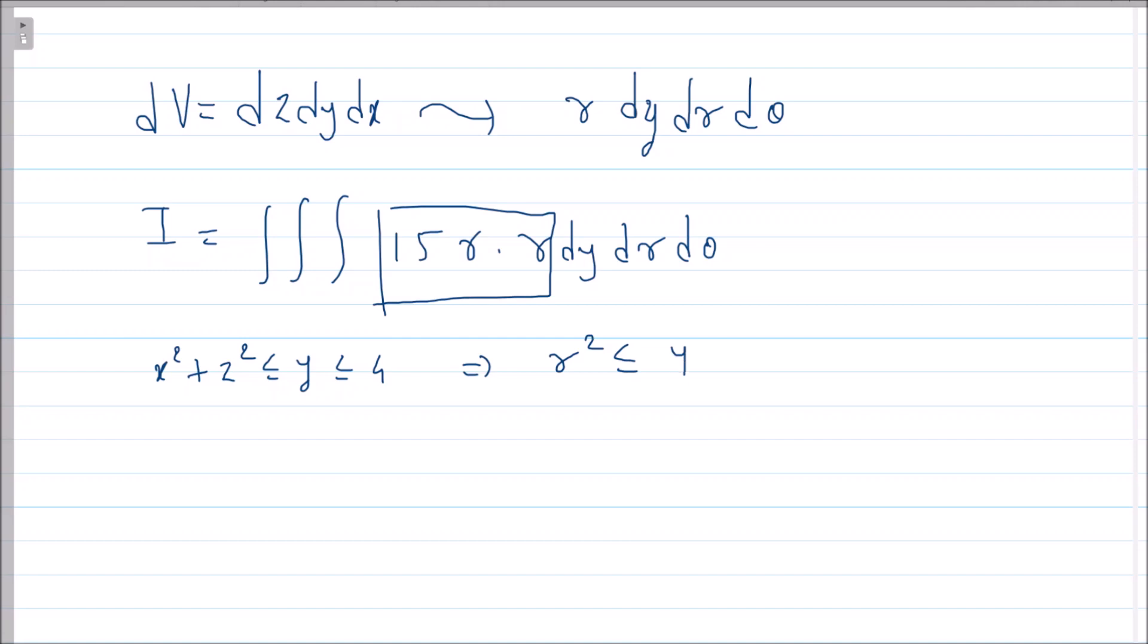That means what? r² ≤ y ≤ 4. When I equate both the equations, what do I get? I get 4 = x² + z².